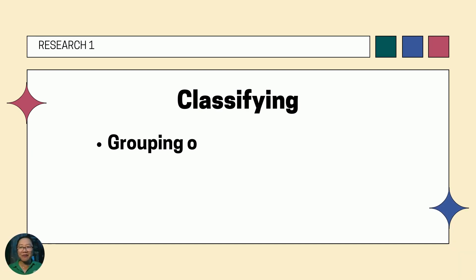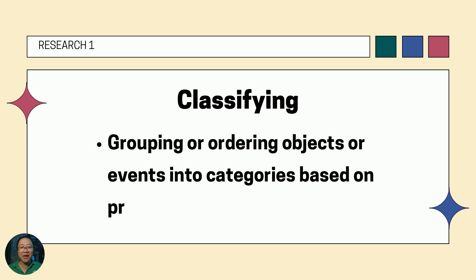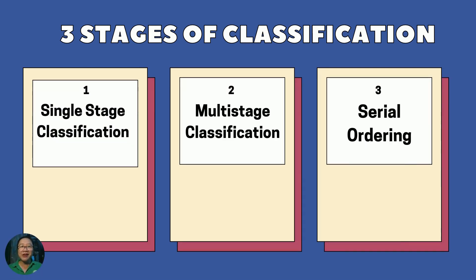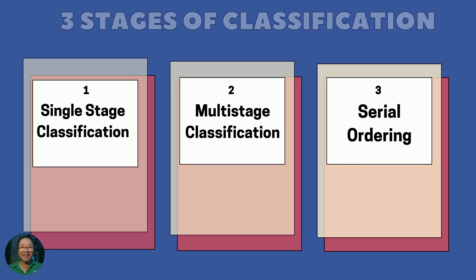Let us unlock first classifying. Classifying is grouping or ordering objects or events into categories based on properties or criteria. There are three stages of classification: one, single-stage classification; two, multi-stage classification; and three, serial ordering.